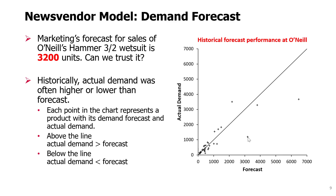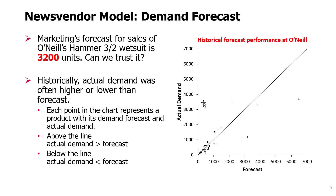However, when there is a point below the line, the forecast was much higher than the actual demand. And when there is a point above the line, the forecast was too low — the actual demand was higher. So we see that the performance of the marketing department's forecasting process was not perfect.